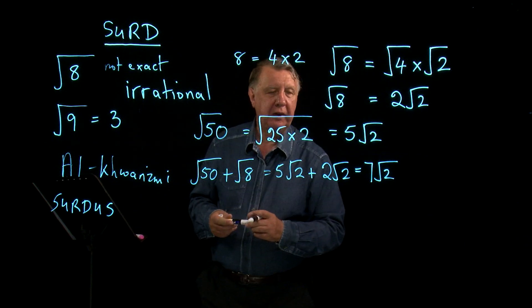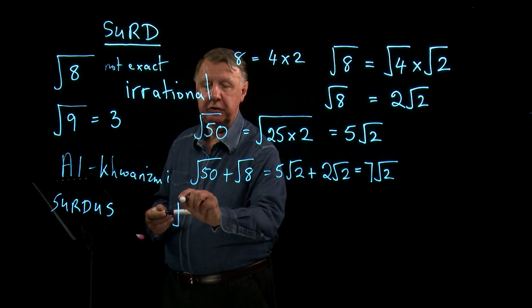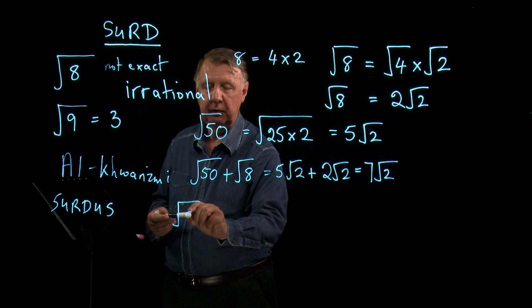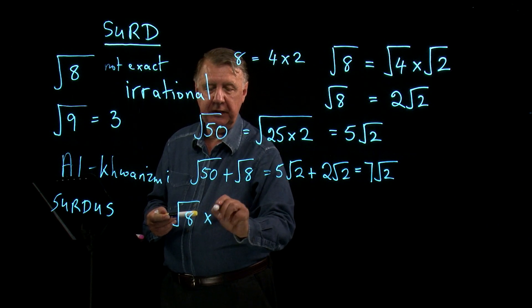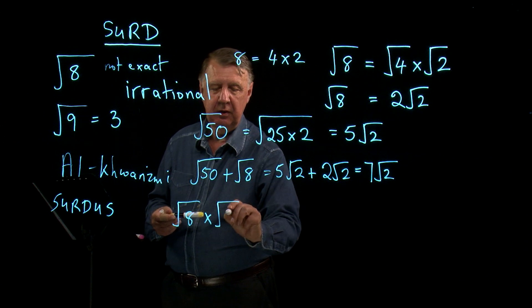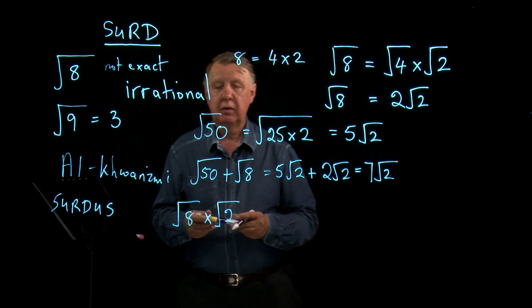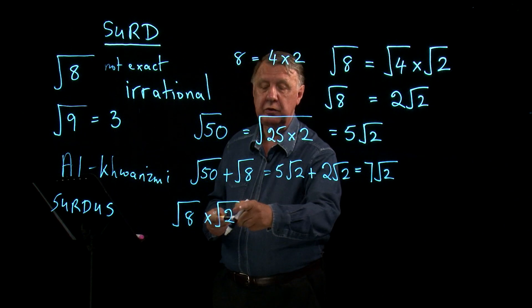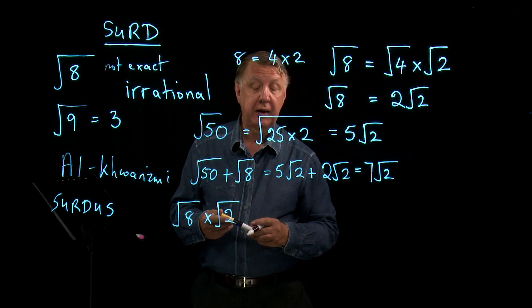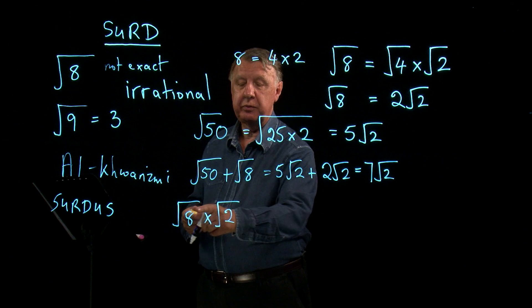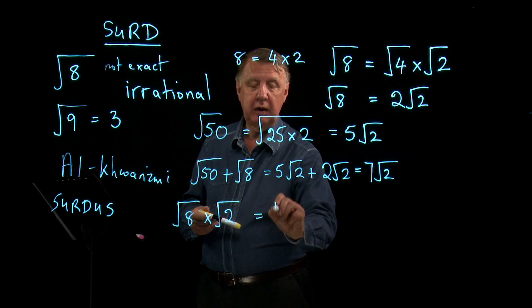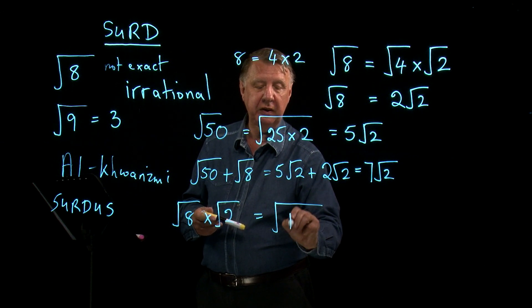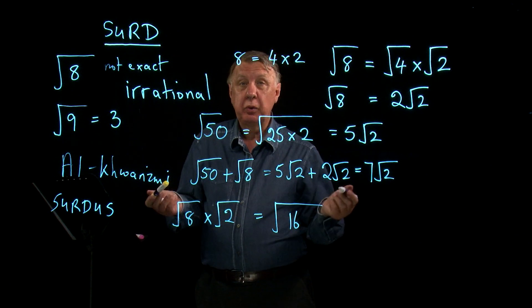I can do other things with these. I can multiply two surds together. I always think this is very clever. The square root of 8 is not exact. The square root of 2 is not exact. Multiply them together. I have the square root of 16. Well, we know what that is. It's 4.